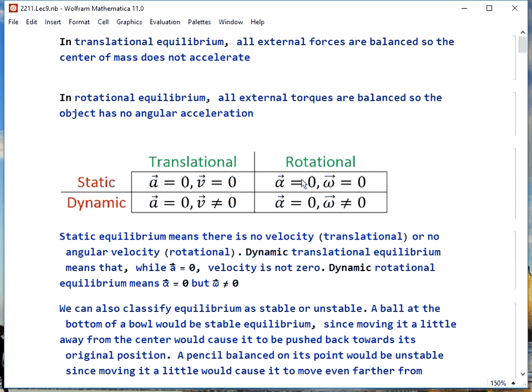For rotational static equilibrium, not only is alpha zero, but omega, the angular velocity, is also zero. This could be your wheels when your car is parked. And then your wheels, if you have the cruise control set on a straight road, that would be dynamic rotational equilibrium. Alpha is zero, omega is not equal to zero.